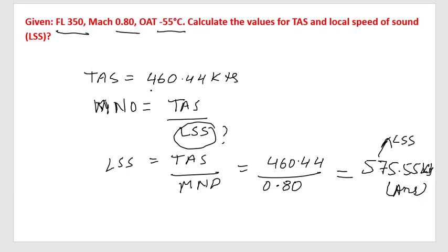So, we have to find TAS and local speed of sound. TAS we have got as 460.44 and we have got local speed of sound as 575.55.